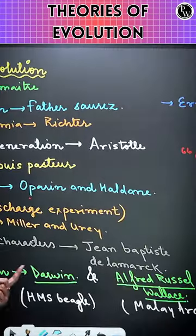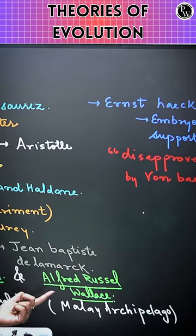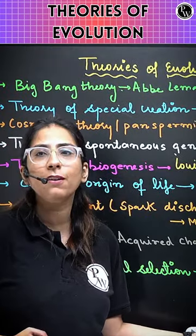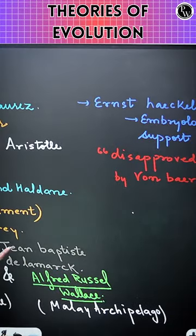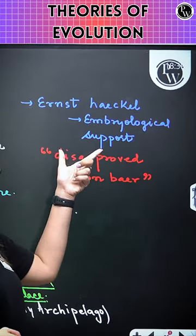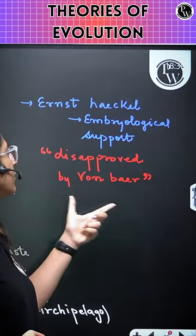Theory of Natural Selection by Darwin, also contributed by Alfred Russel Wallace, who both went on different voyages. Their ship names are HMS Beagle and Malay Archipelago. Ernest Haeckel gave embryological support, which was disapproved by Von Baer.